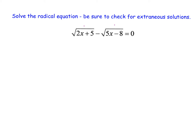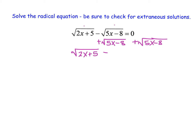That way, if we square both sides of the equation, we can undo both square roots at the same time. So what we can do is add the entire square root of 5x minus 8 to each side, and rewrite this as the square root of 2x plus 5 is equal to the square root of 5x minus 8.